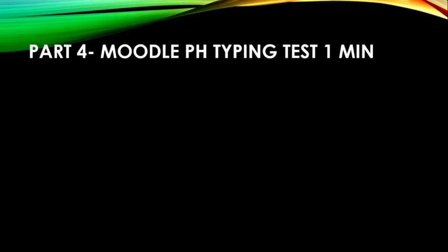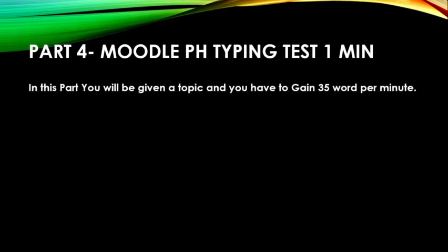Part four is the typing test. In this part, you'll be given a topic and you have to achieve 35 words per minute. I know most of us have a hard time with the typing test — it's hard to hit 35 words per minute in one minute. Let me go ahead and share tips and techniques for you to pass it.